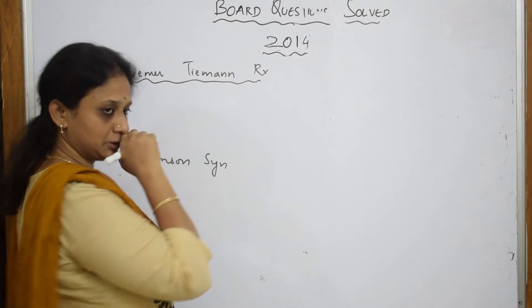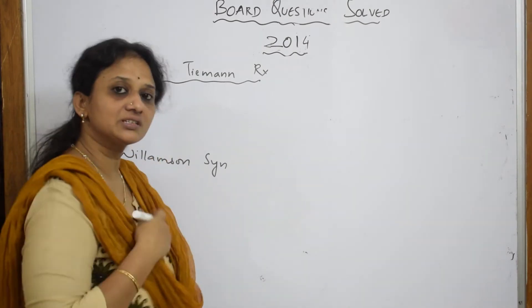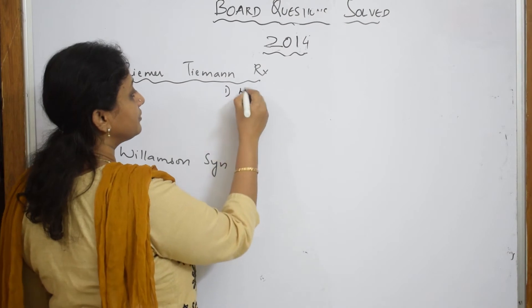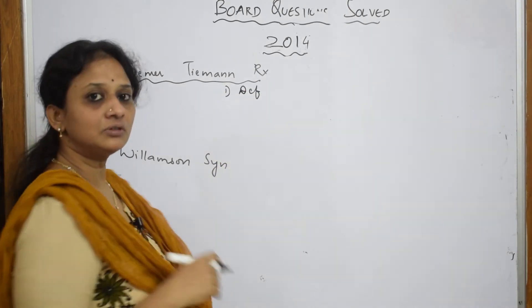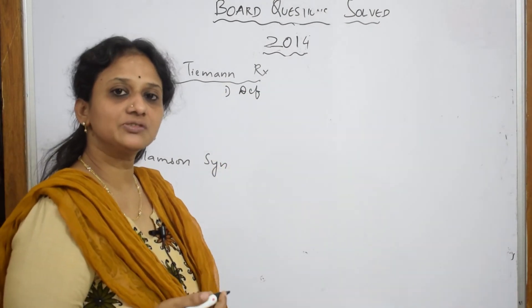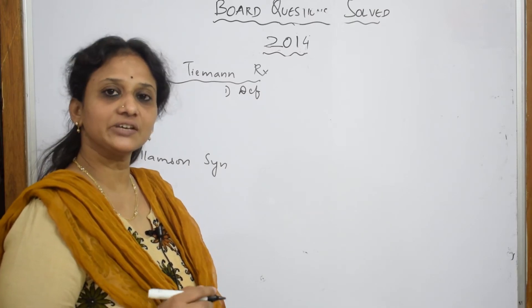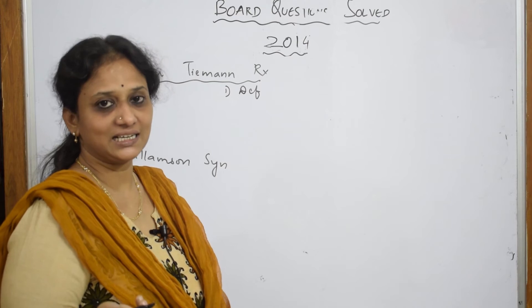Whenever a name reaction is given to you, if this is given for 3 marks, first important thing you have to write the definition. Phenol in the presence of chloroform, sodium hydroxide and acidification further gives us your salicylaldehyde.